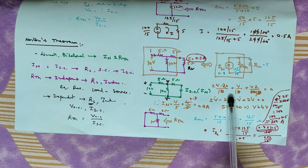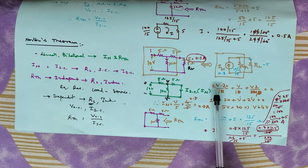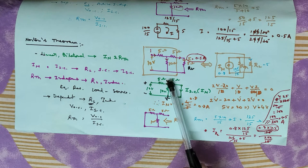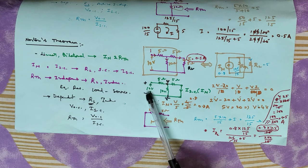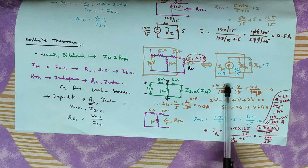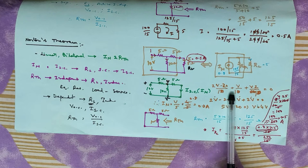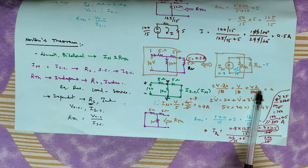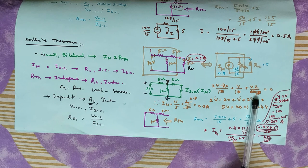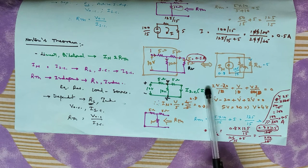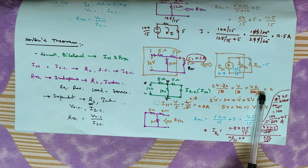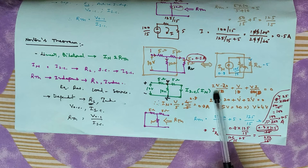Applying Kirchhoff's current law, the sum of branch currents leaving the node equals zero. So the equation becomes: (V minus 10) divided by 5, plus V divided by 10, plus V divided by 5 equals zero.